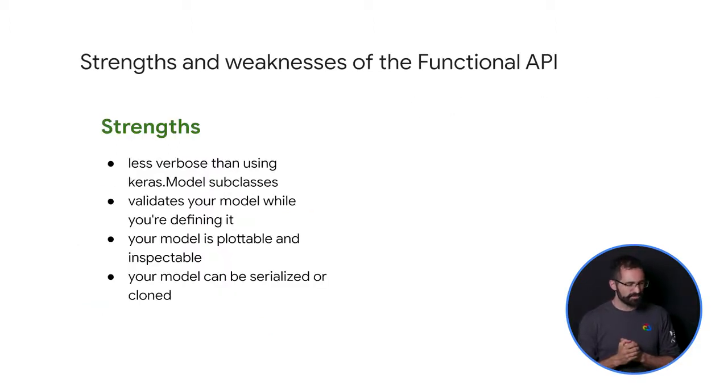Okay, so let's talk about some strengths and weaknesses. Strengths: It's less verbose than using keras.model subclasses. It validates your model while you're defining it. In the functional API, your input specification, that's your shape and your dtype, is created in advance via the input. And every time you call a layer, the layer checks that the specification passed to it matches its assumptions, and it'll raise a super helpful error message if not.